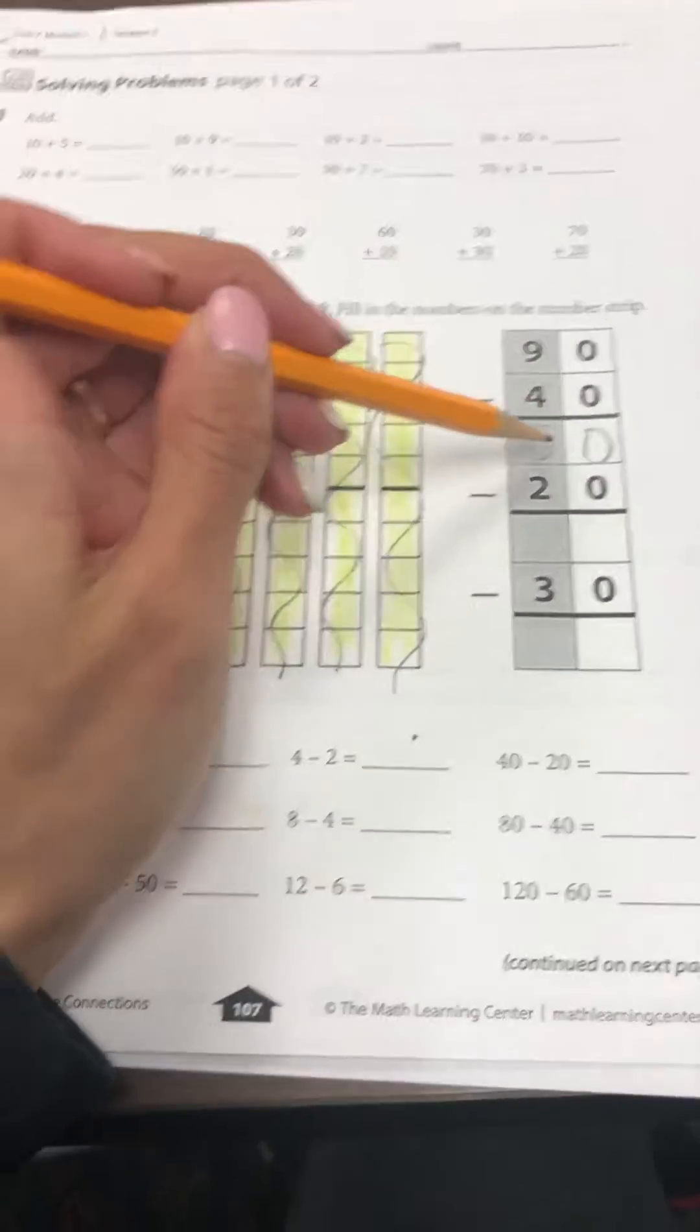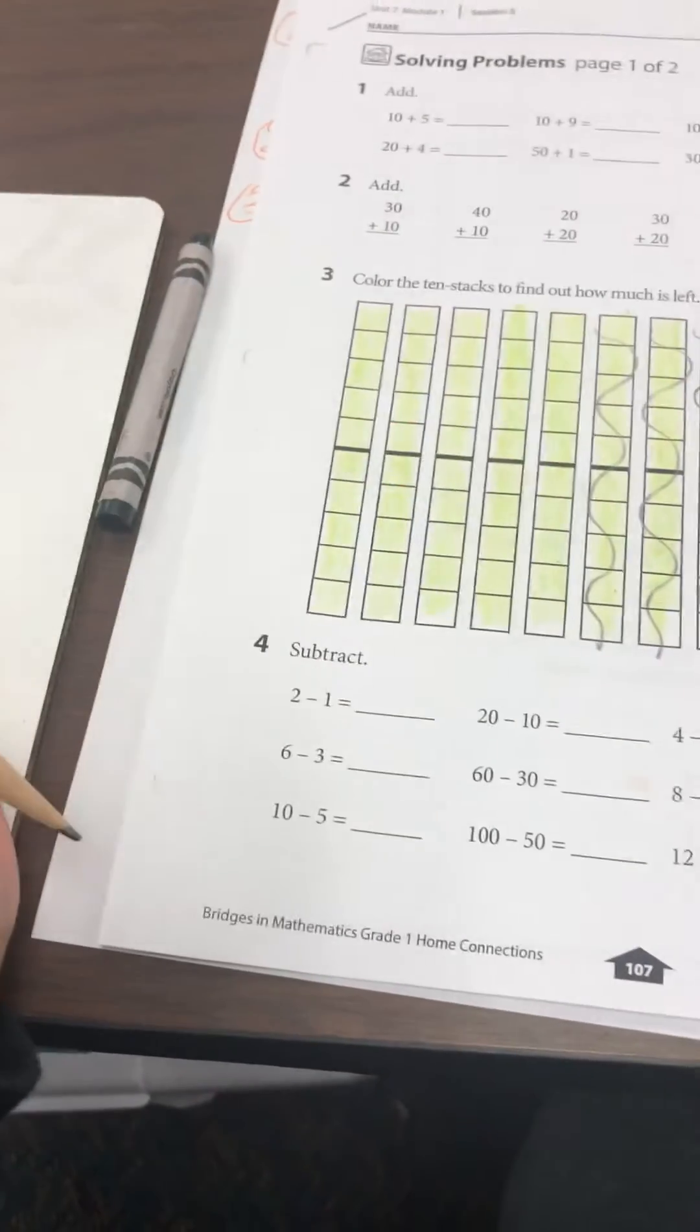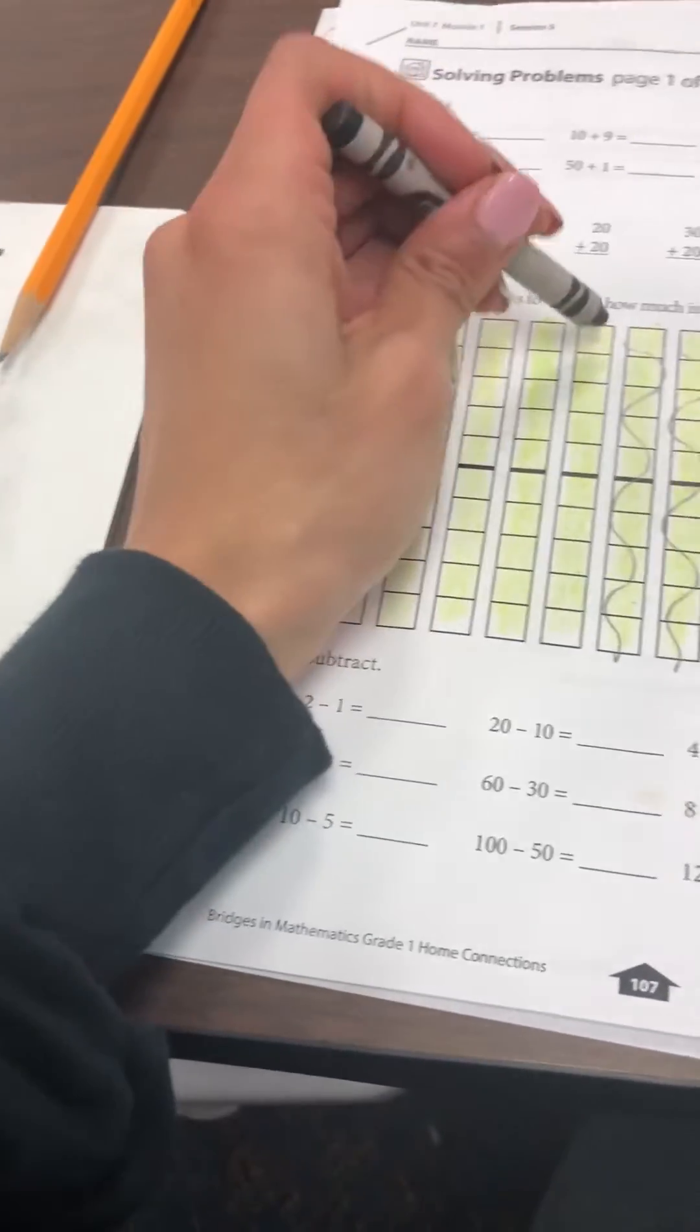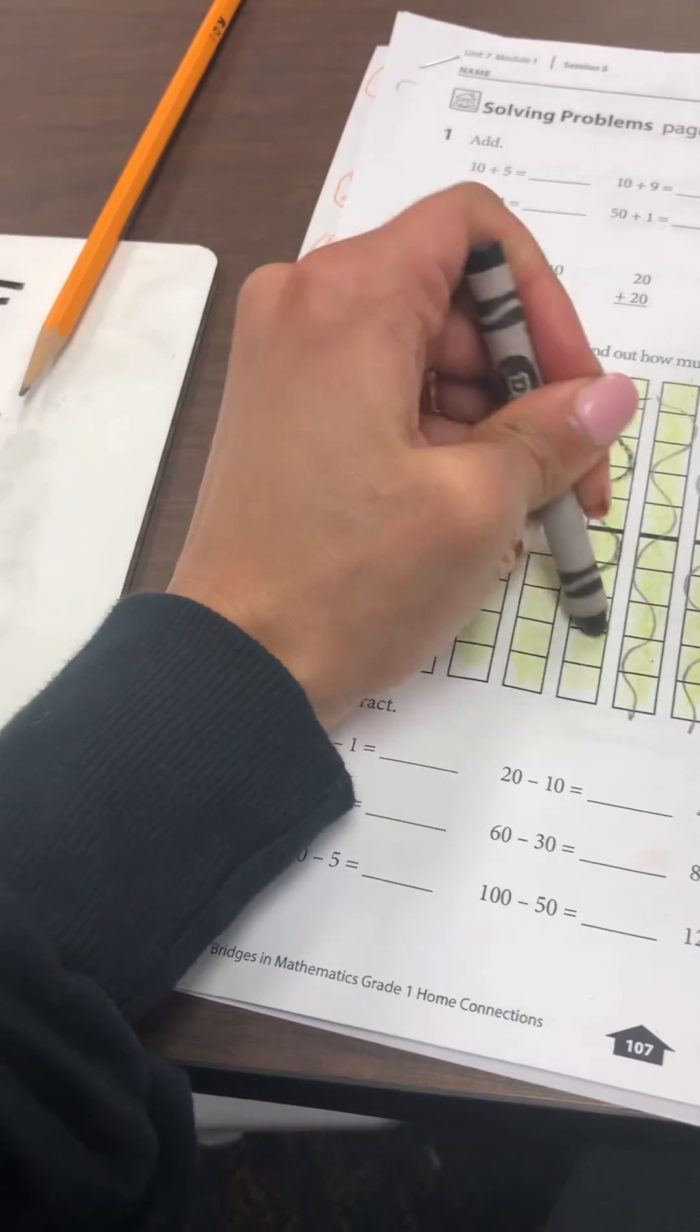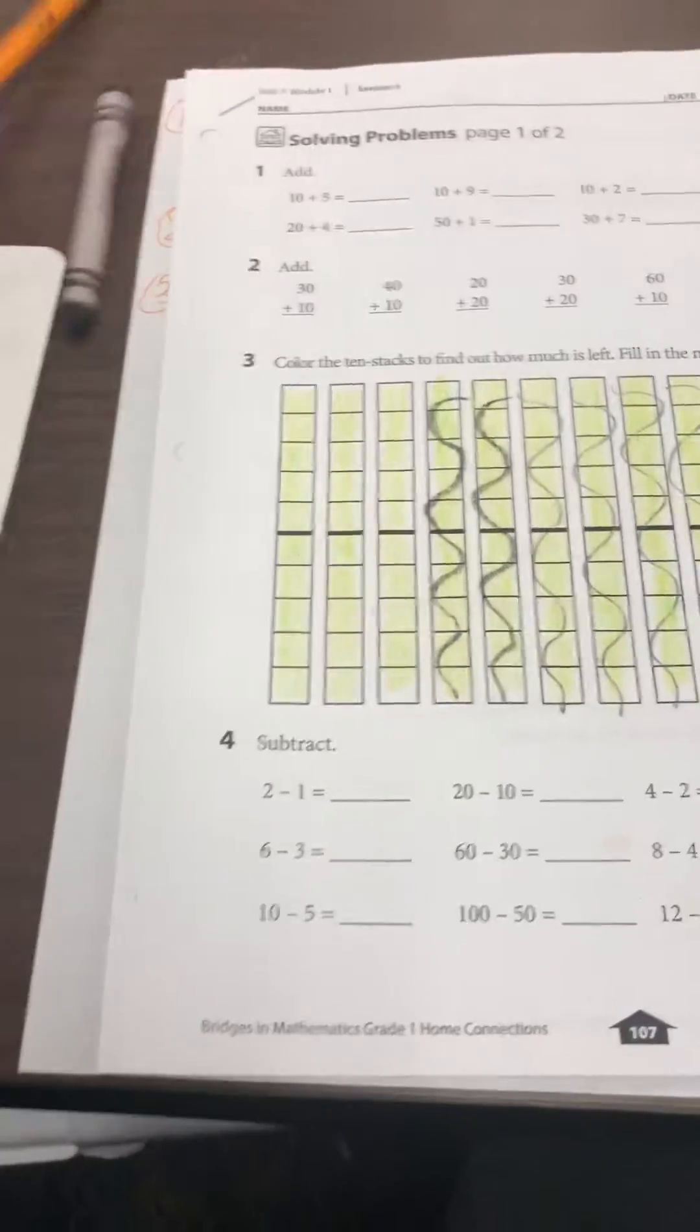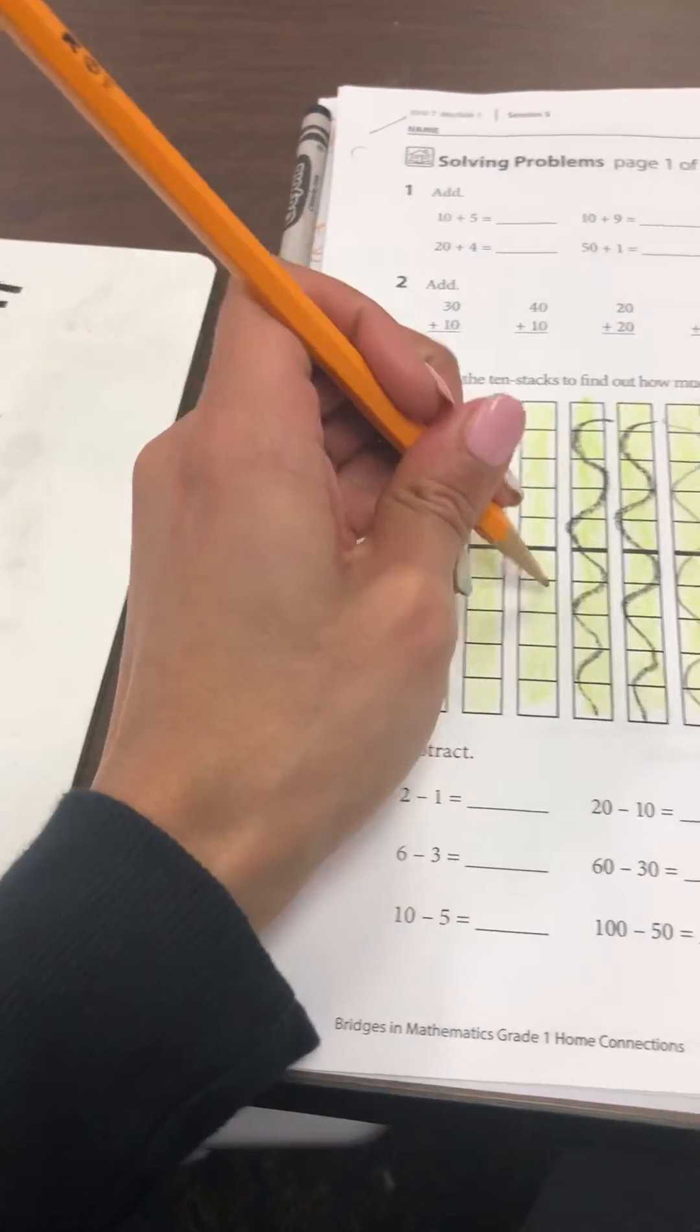And then our next problem is 50 minus 20. So again using a pencil or maybe you can do a different color, we'll do a black crayon. We're gonna subtract 10, 20, and then your child is gonna count how much is left: 10, 20, 30.